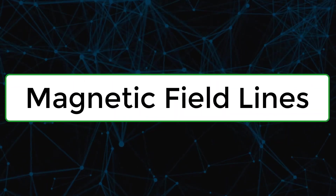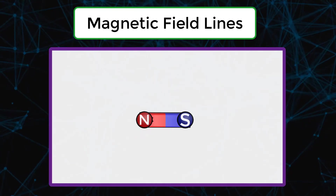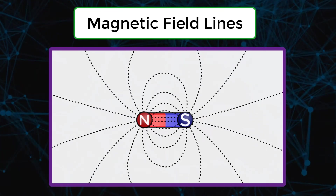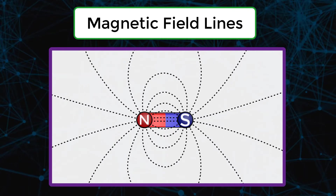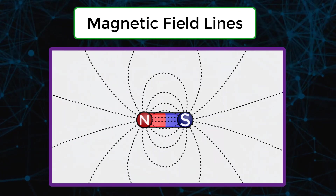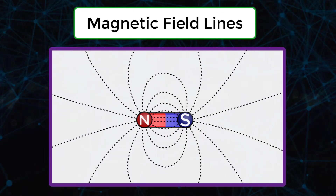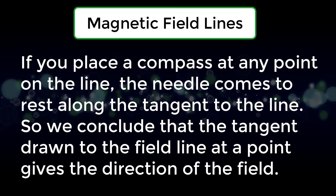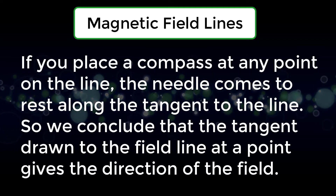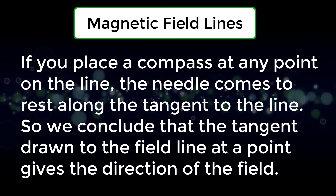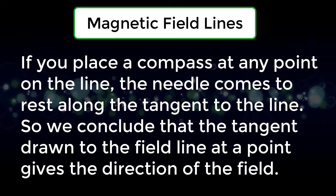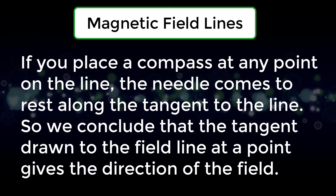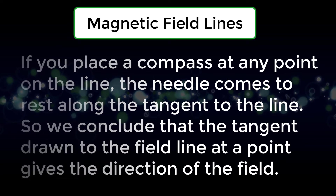Magnetic Field Lines: Field lines are imaginary lines. These lines help us to understand the nature of the field. These curved lines represent the field lines. If you place a compass at any point on the line, the needle comes to rest along the tangent to the line. We conclude that the tangent drawn to the field line at a point gives the direction of the field.